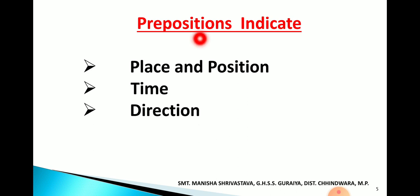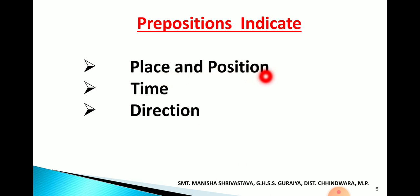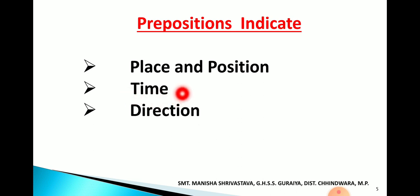Now, preposition indicates three things. First — place and position: preposition हमको बताता है noun की place या position क्या है, उसकी स्थिती क्या है. Secondly, preposition indicates time — यानि किस समय पर काम हो रहा है, वह बताता है preposition. And thirdly, preposition indicates direction. तो हम देखते हैं इनके examples.